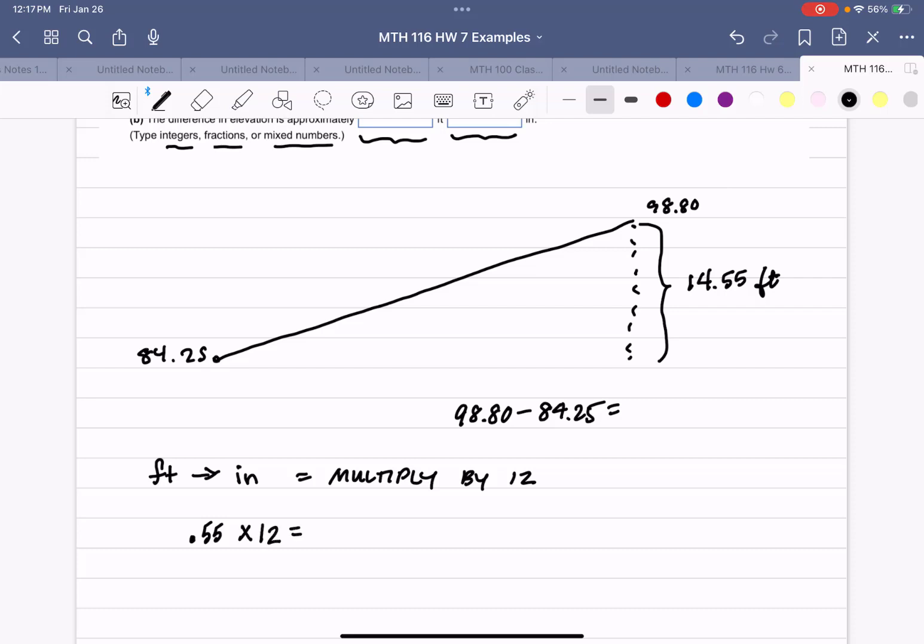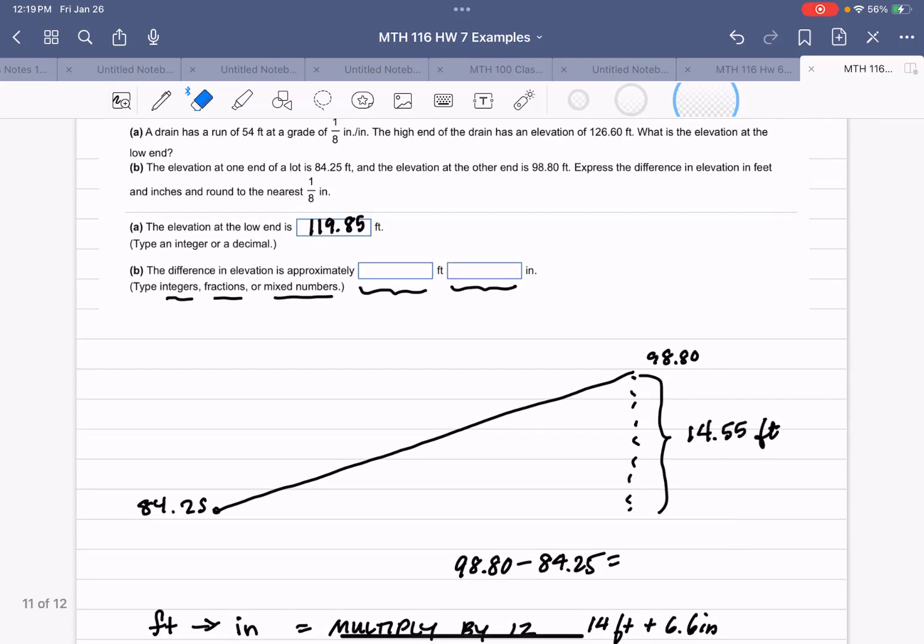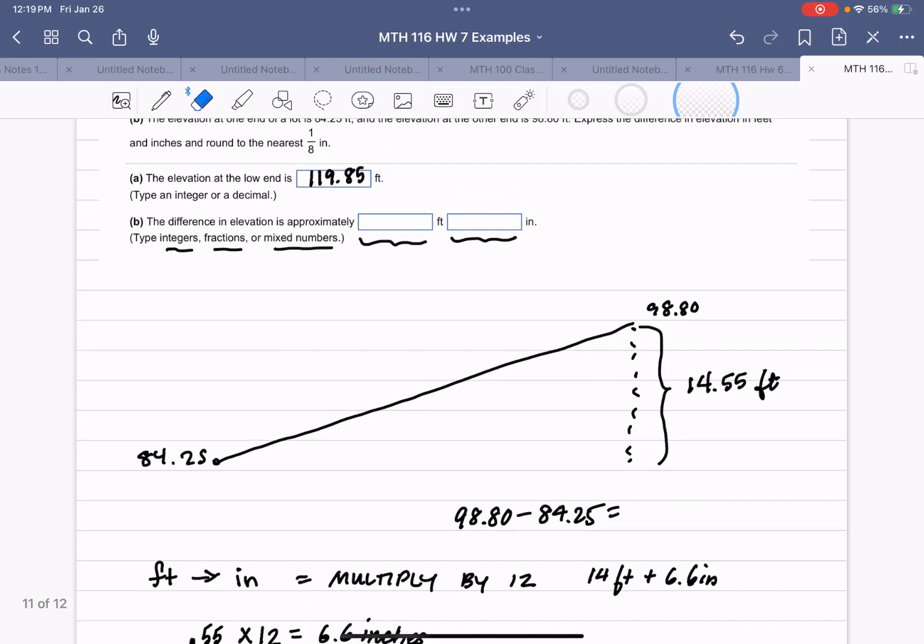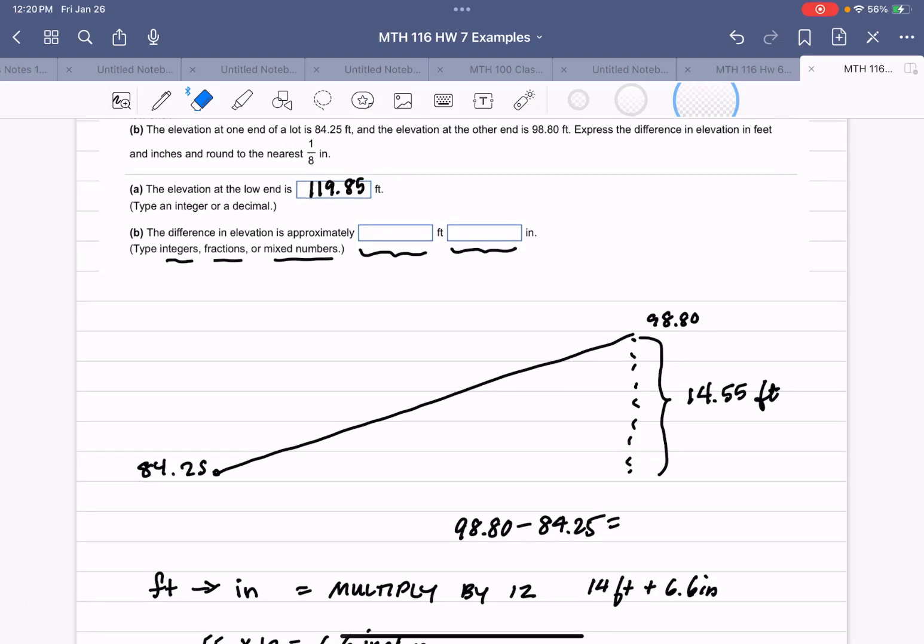So we've got to take our 0.55 and multiply that by 12. 0.55 times 12 gives me 6.6 inches. So it's 14 feet plus 6.6 inches. Now we need to pay attention here before we do this final answer, because it says to the nearest eighth of an inch. Let's talk about what an eighth of an inch is in decimals, because we've got this 6.6 inches. So one eighth of an inch, one divided by eight, is 0.125.